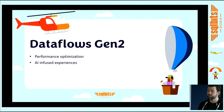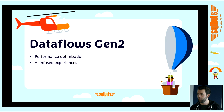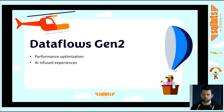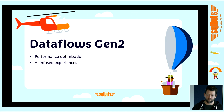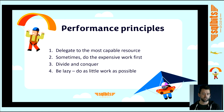Data Flows Gen 2. Today we're going to look at performance optimizations you can apply while developing your Data Flow to get the most out of Data Flows Gen 2, and then some AI-infused functions within Data Flows. We have four performance principles: first, try to delegate as much as you can to the most capable resource; second, sometimes you need to do the most expensive work first; third, divide and conquer; and fourth, be lazy — lazy evaluation within Power Query.